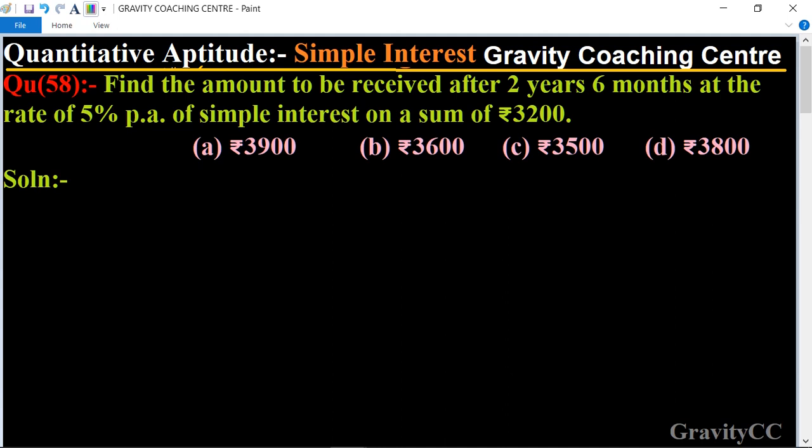Quantitative Aptitude, chapter Simple Interest, question number 58: Find the amount to be received after 2 years 6 months at the rate of 5% per annum of simple interest on a sum of ₹3200.